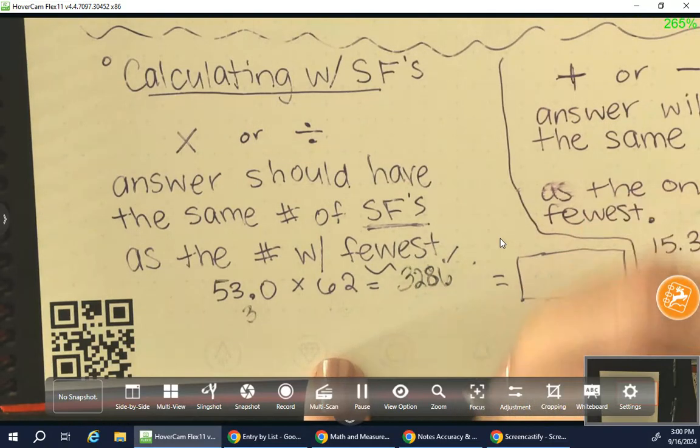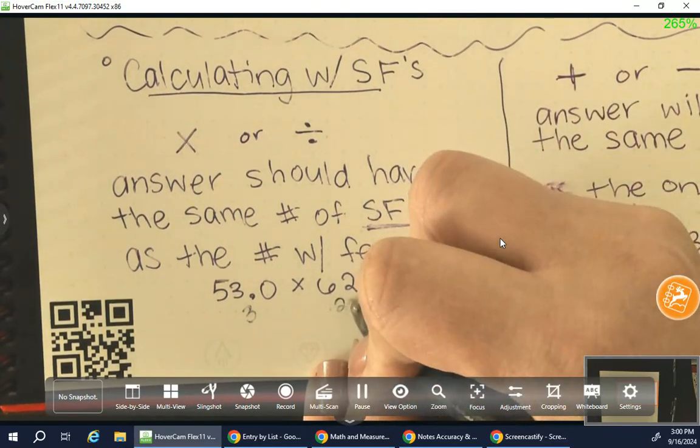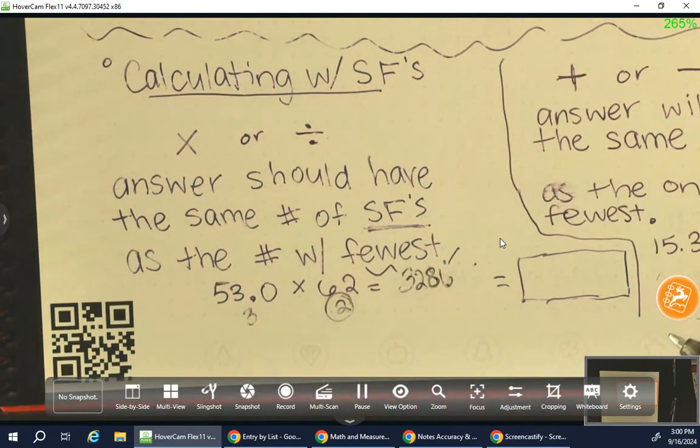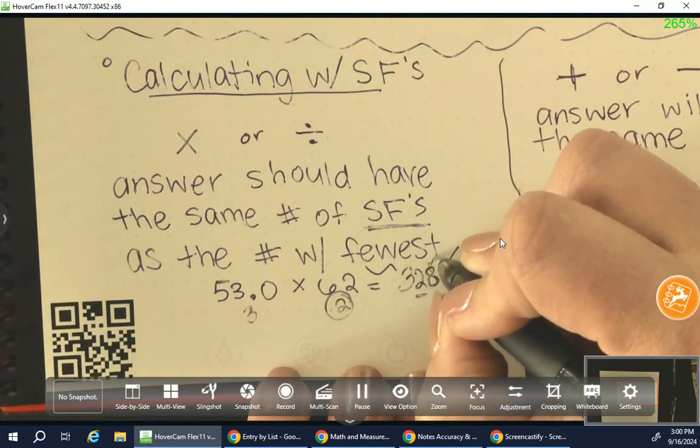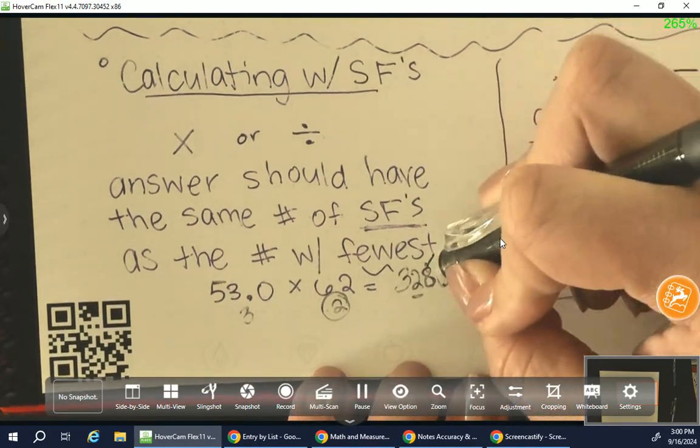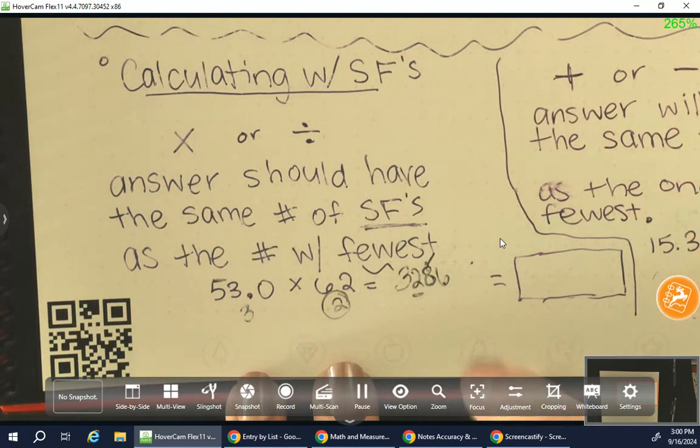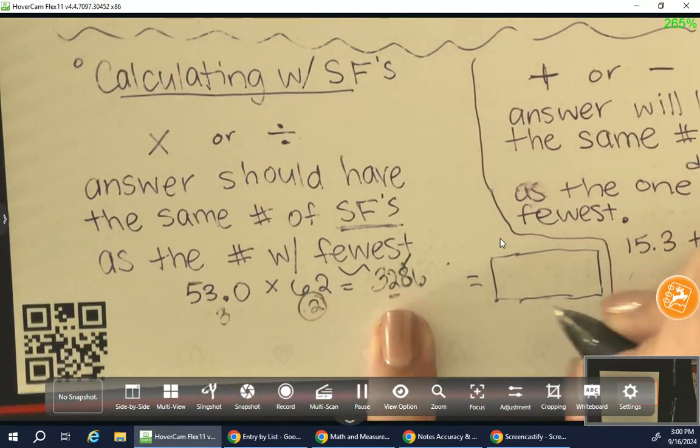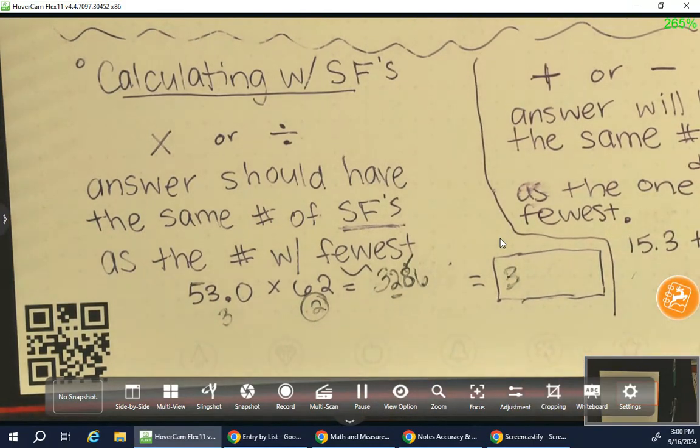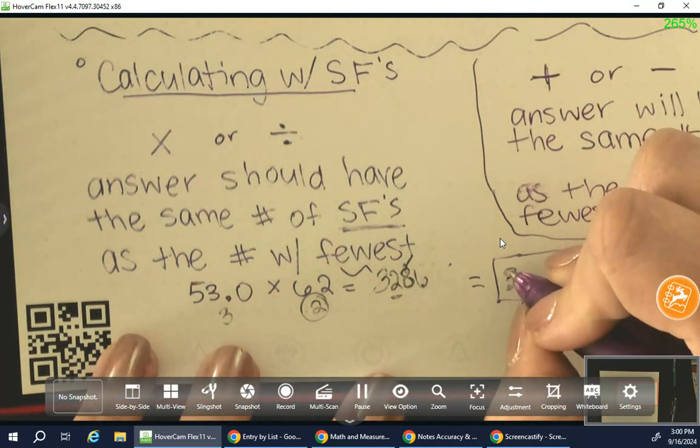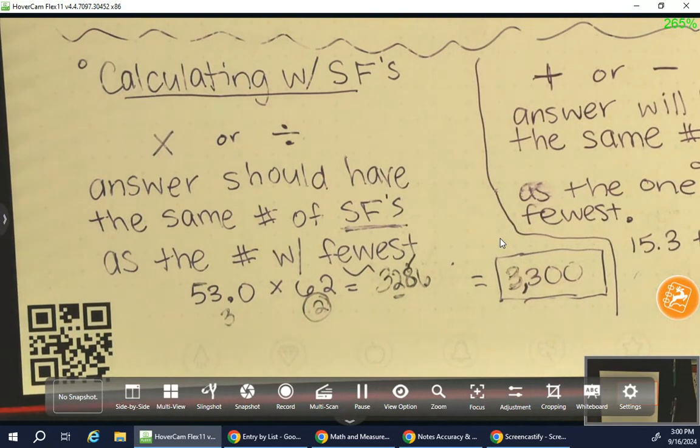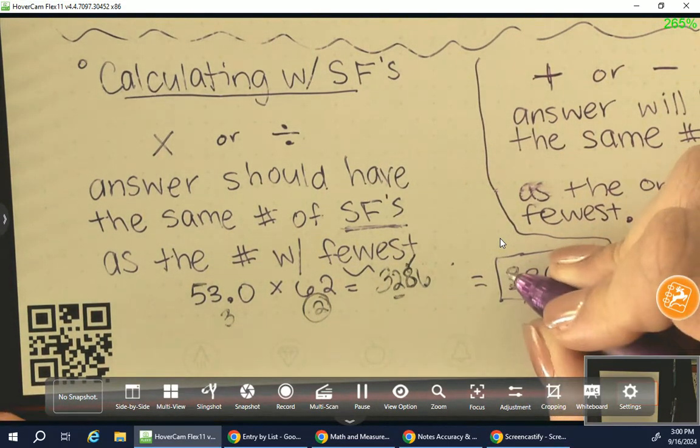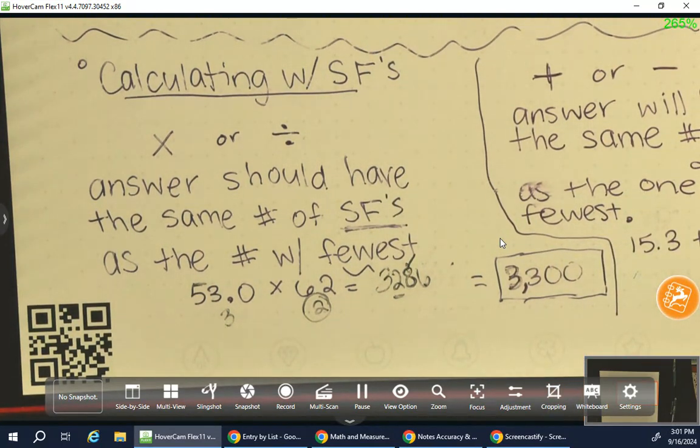So the example that I put up here, I went ahead and put 53.0 times 62. So if I pull out my calculator, on the calculator, I'm getting 3,286. I'm going to write that out. 3,286. When I am trying to figure out what the actual answer is that I'm going to report though, I need to go back and look at these, right? So since it's multiplication division, we're counting up significant figures. So how many are in 53.0? Three. How many are in 62? Two. So the smaller number is two. So my answer can only have two significant figures. So we're going to count one, two. We're paying attention to that one, checking the one behind it. And that tells us that we end up with the answer. 3,300. And I'm not going to include a decimal. If I include a decimal, then it's not a correct answer anymore.